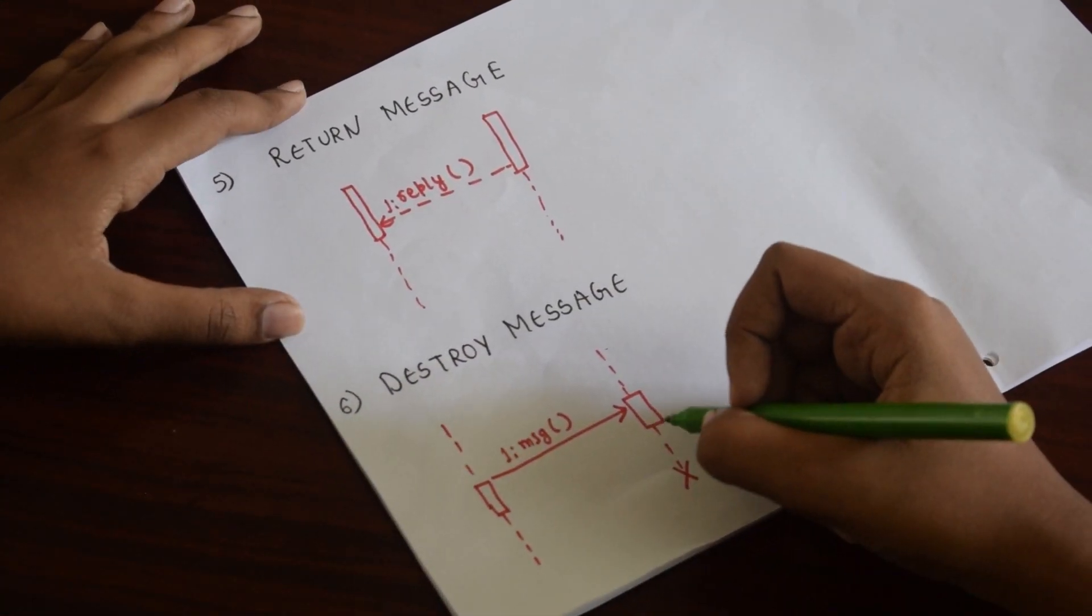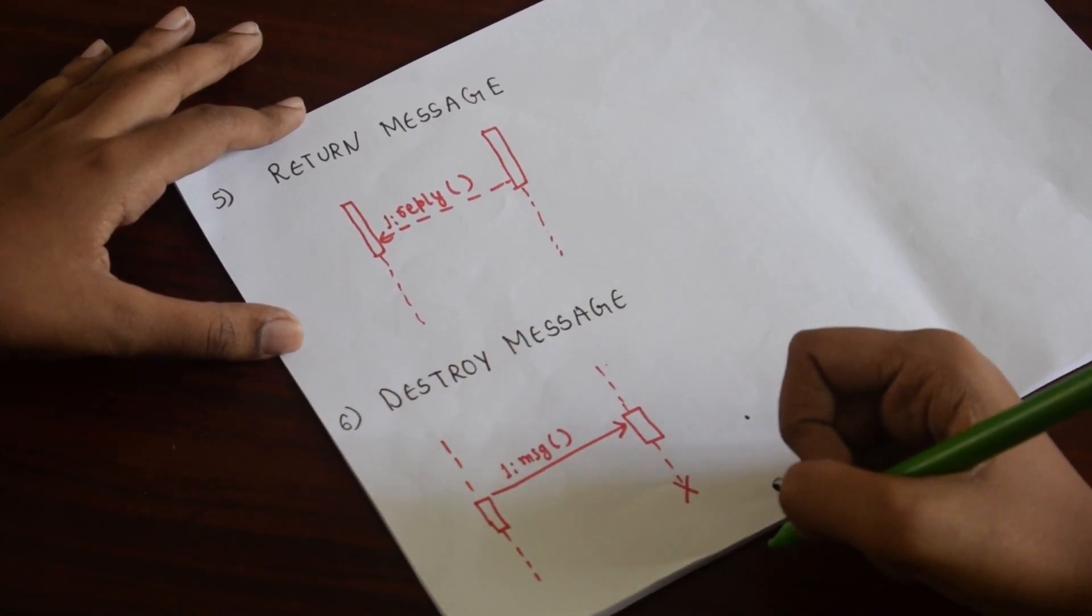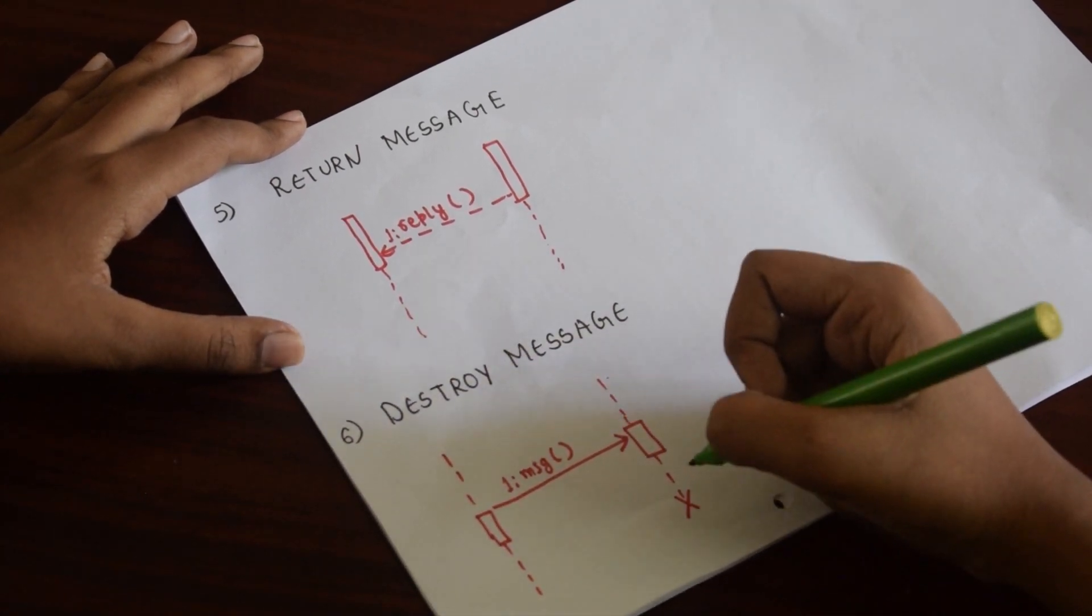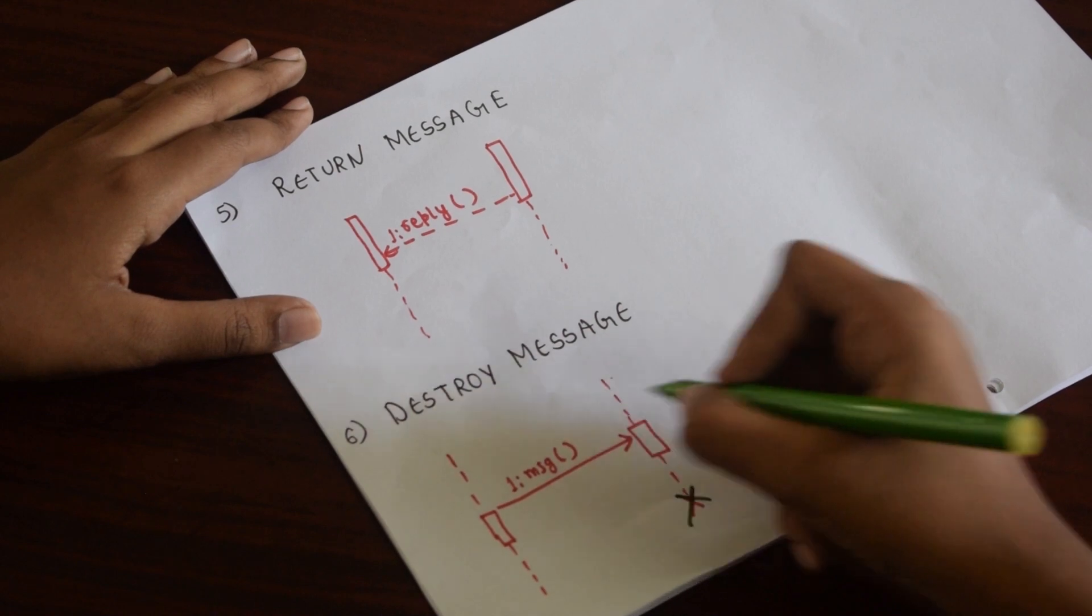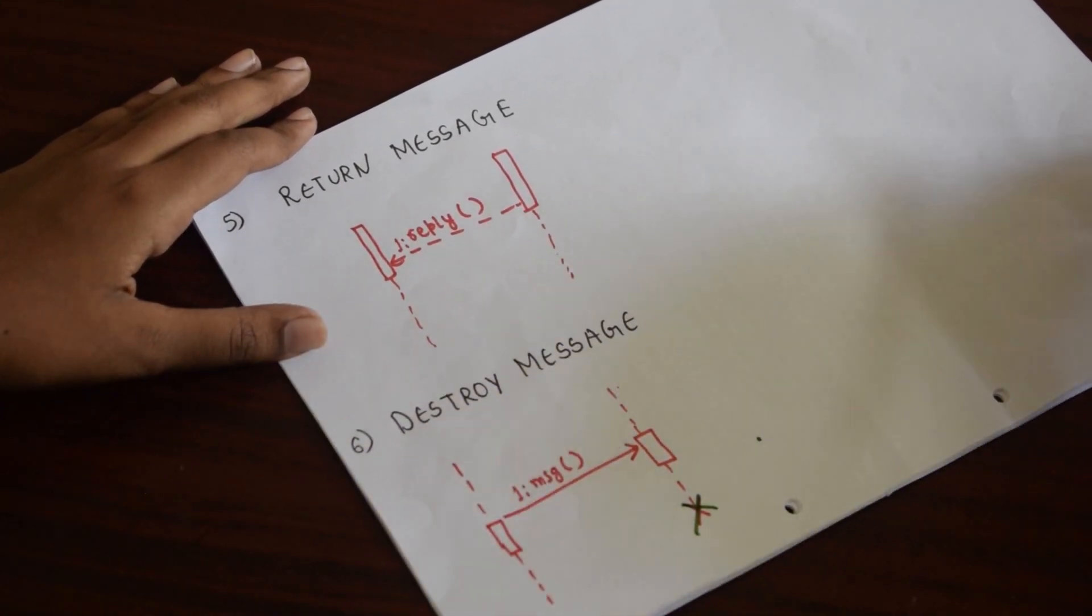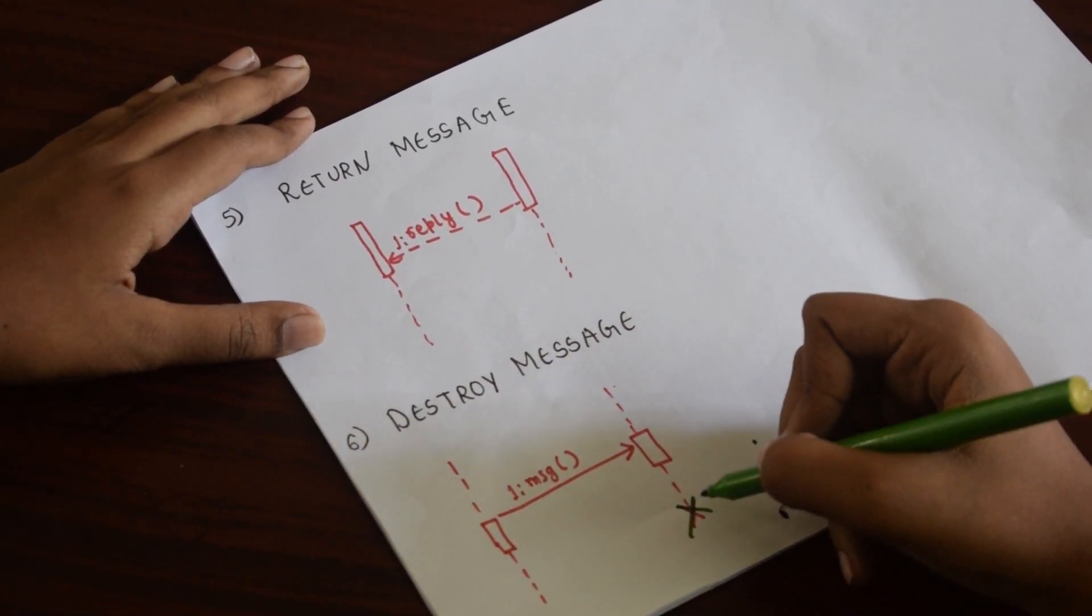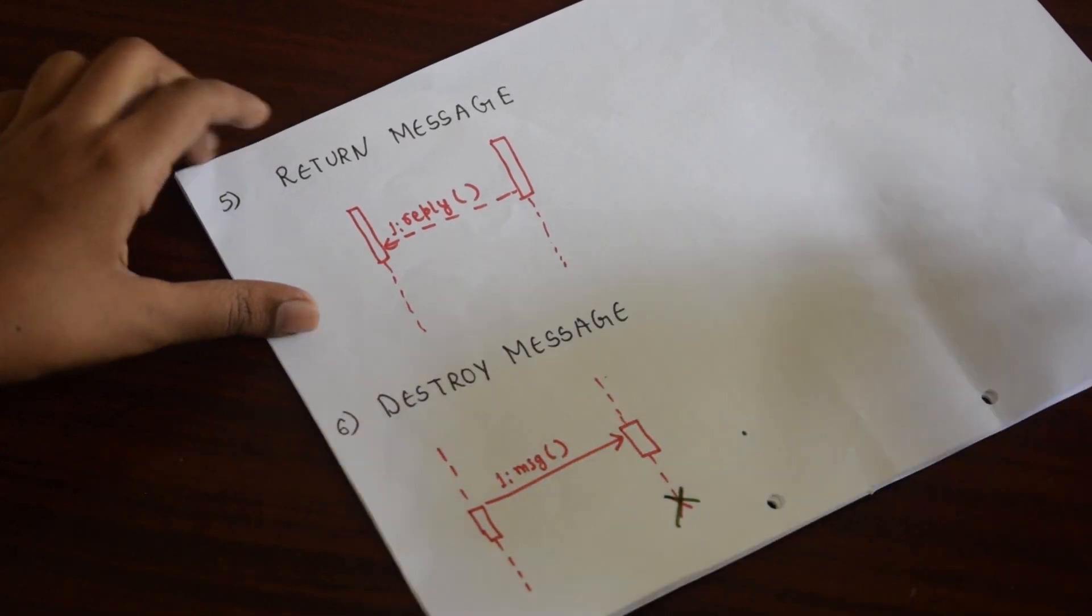Next is destroy message. When an object is no longer needed in further interactions, then that message will be destroyed, marked by a cross at the end of the lifeline.